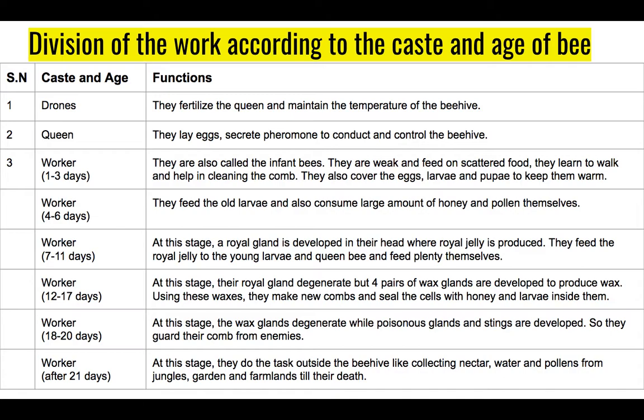At eighteen to twenty days, poisonous glands and stingers are developed, so the worker bee guards the comb from enemies. After twenty-one days, meaning after the third week, they do tasks outside the beehive, like collecting nectar, water, and pollen from jungles, gardens, and fields until their death.